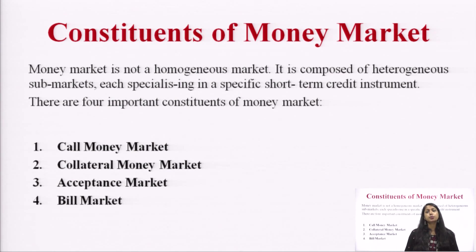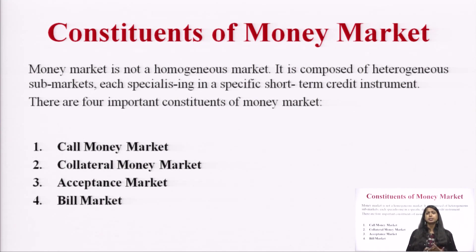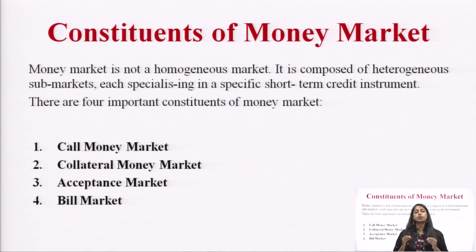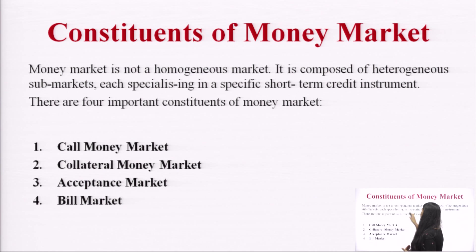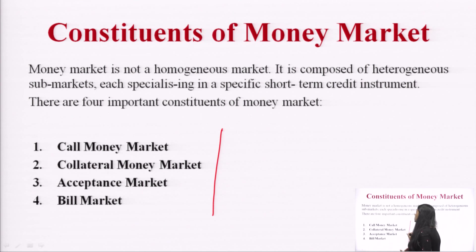Moving to the constituents of the money market. Money market is not a homogenous market — it is a heterogeneous market with different instruments according to your needs. Whether you need a bill for 10 days, 90 days, one day, or 364 days, it depends on how much time you need. There are four important constituents of the money market.